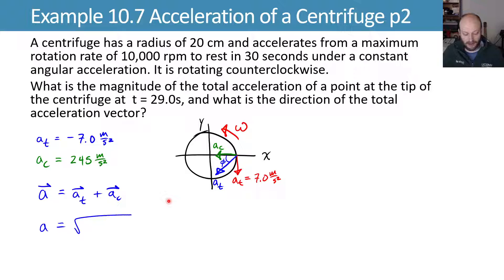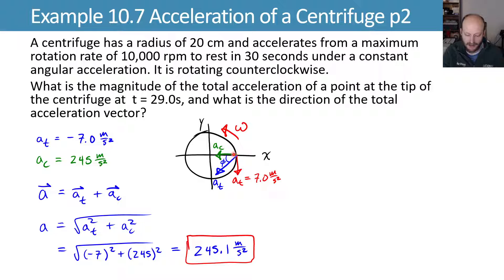That means that the magnitude we get by squaring each component, adding them and taking the square root, which results in 245.1 meters per second squared. To get the direction, we now have to do the inverse tangent of the opposite side over the adjacent side. Here that opposite side will be that 7, and the adjacent side will be the 245.